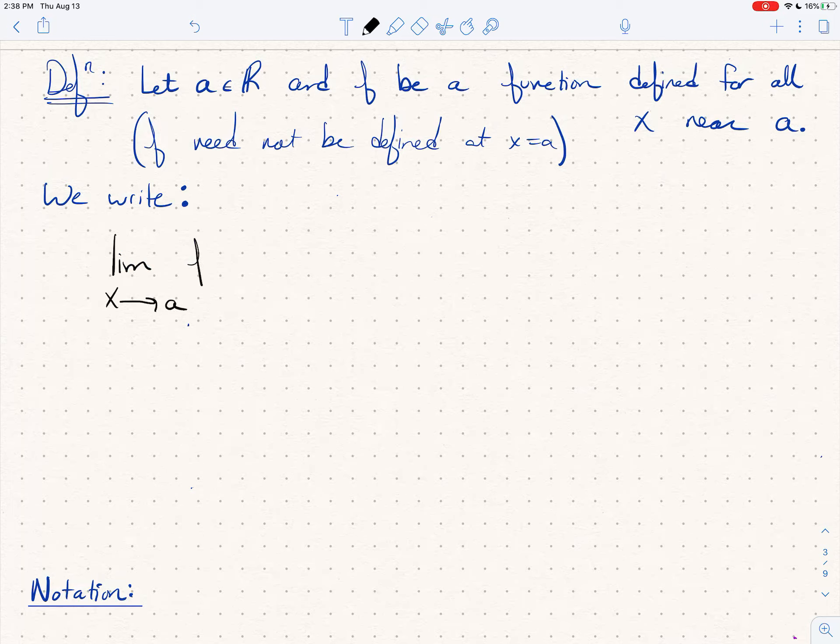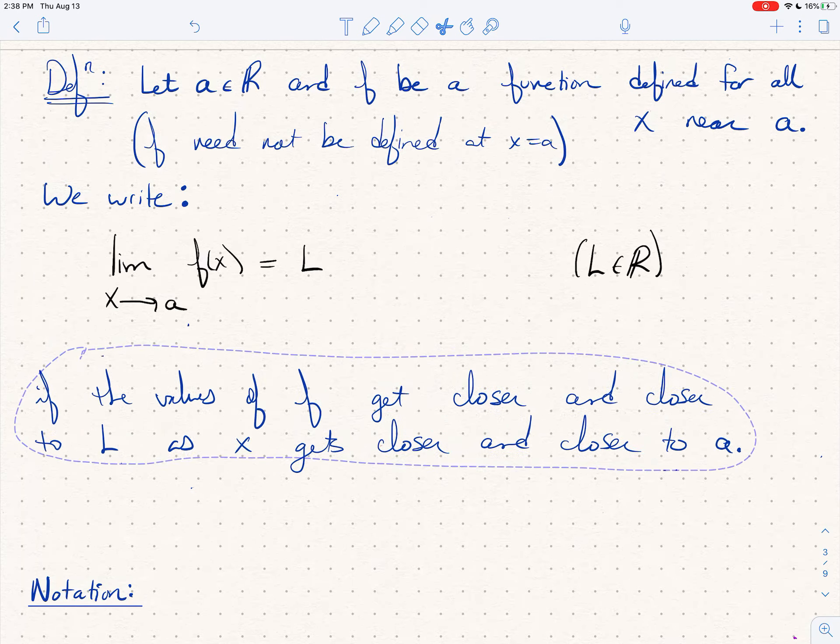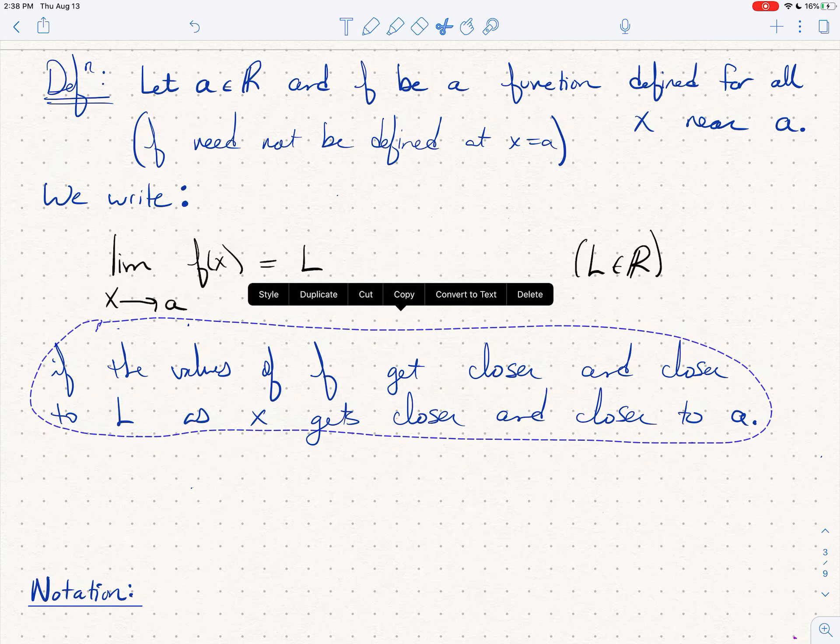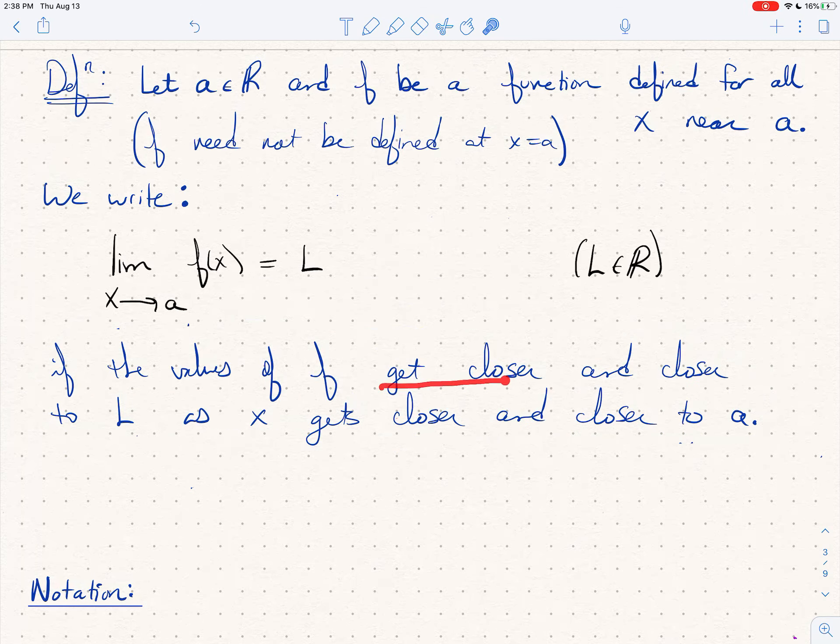So we write lim, which stands for limit. The limit as x goes to a of f(x) equals L, where L is some real number. These limits, we're going to say that this limit equals a number L if the values of f get closer and closer and closer to L as x gets closer and closer and closer to a.